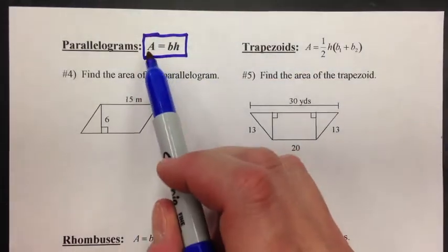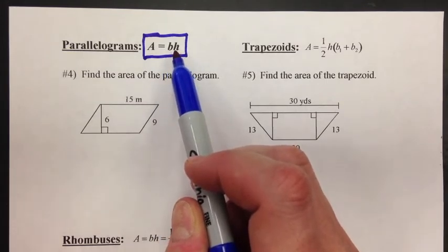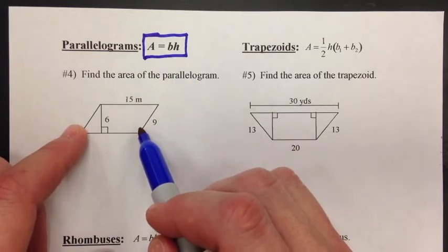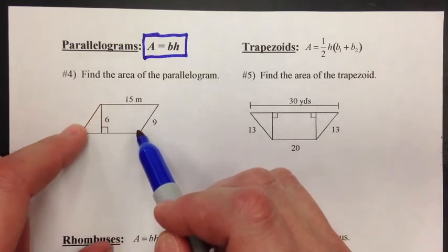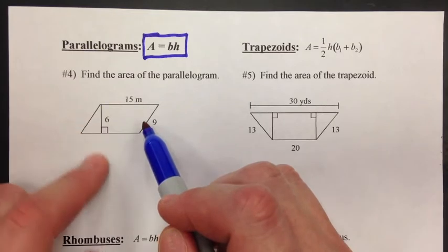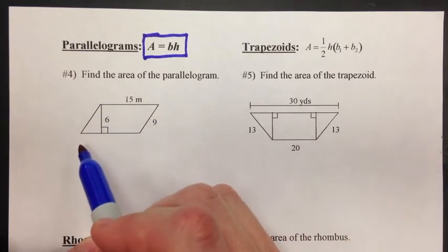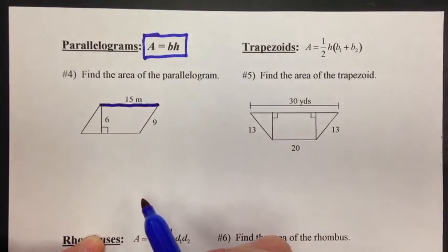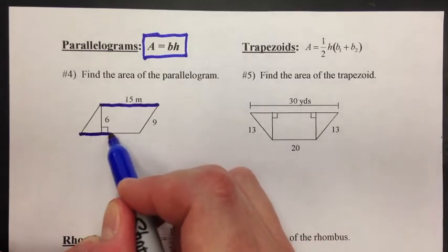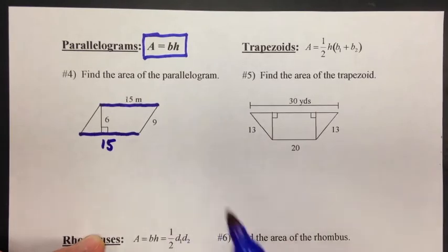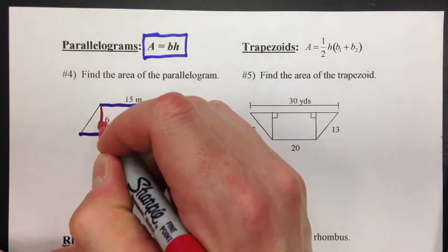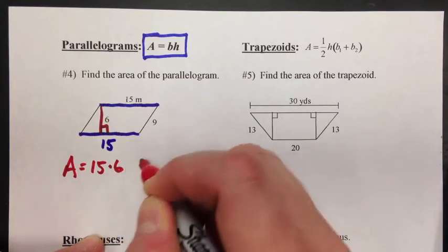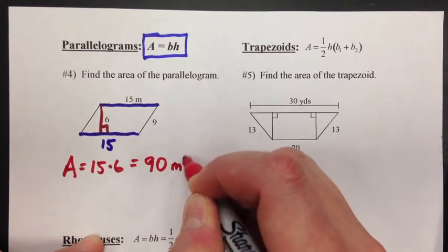You'll notice when you look at this formula, area is base times height. That's the exact same formula as the area of a rectangle. A parallelogram is just taking a rectangle and shifting it — we just shift these two sides, so the area actually does not change. In this problem, they give you three numbers. The base would be 15. In a parallelogram, opposite sides are congruent, so that's also 15. The height is perpendicular — you're looking for right angles — and the height is 6. Area is base times height, and that would be 90 meters squared.